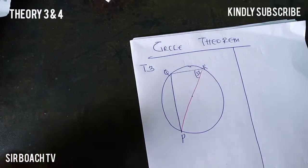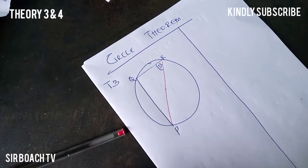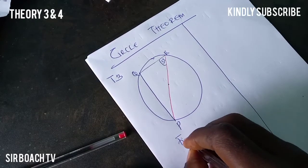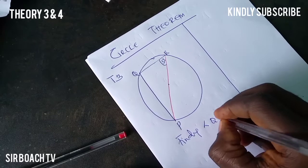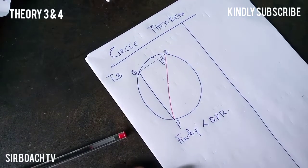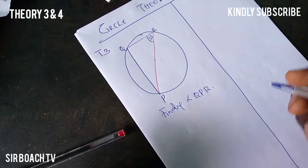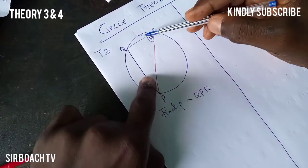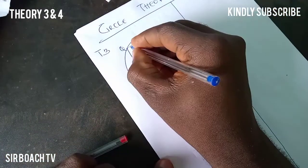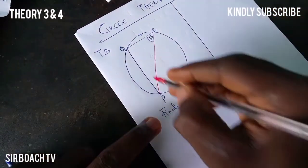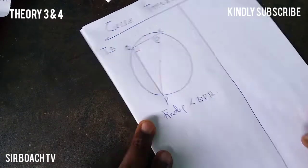Now let's use a question to solve. We have to find angle QPR. Given 58 degrees, we need to find this angle. We know the diameter sustains an angle here, so this side is 90 degrees — let me mark that in red. This side is 90 degrees.